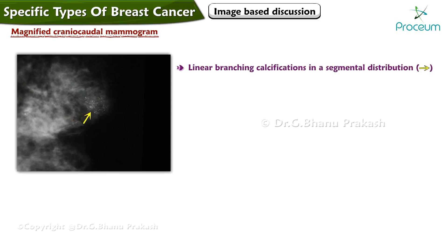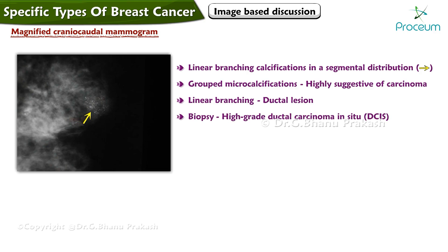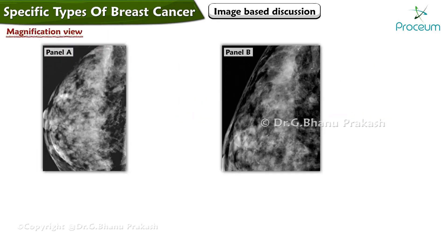A magnified craniocaudal mammogram shows linear branching calcifications in a segmental distribution. Grouped microcalcifications such as these are highly suggestive of carcinoma, and the linear branching pattern is suggestive of a ductal lesion. Biopsy confirmed high-grade ductal carcinoma in situ.